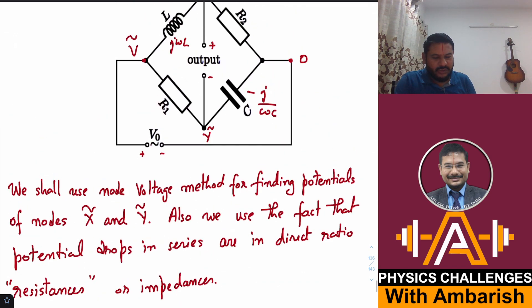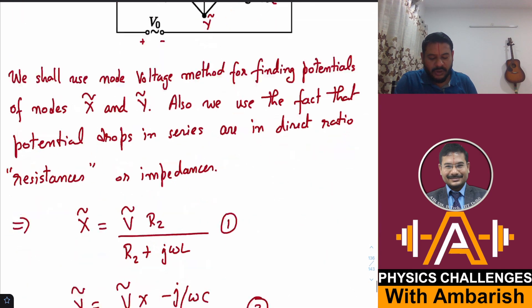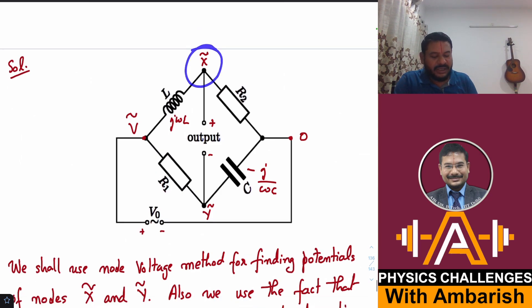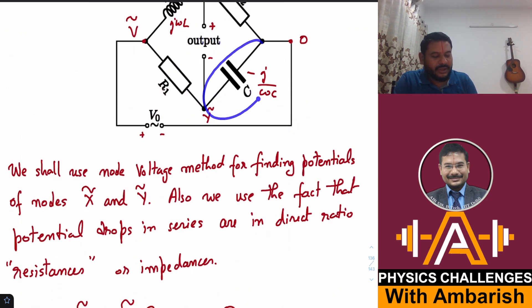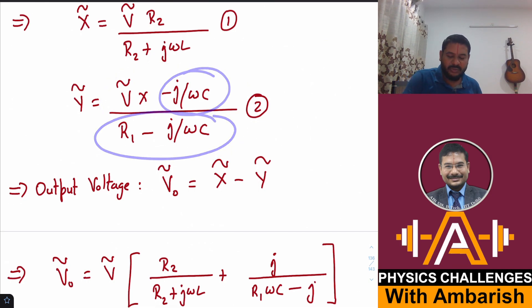To find the value of X tilde we can do R2 divided by R2 + jωL. jωL is the complex impedance of the inductor. So R2 upon R2 + jωL into complex voltage V tilde is the potential of node X. Similarly for Y tilde, the potential drop across capacitor is -j/ωC divided by -j/ωC + R1 into V tilde. So the value of Y tilde is V tilde into -j/ωC divided by R1 - j/ωC.